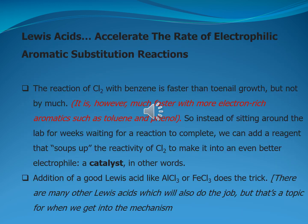Lewis acid accelerates the rate of electrophilic aromatic substitution reactions. The reaction of chlorine with benzene is faster than toenail growth, but not by much. It is, however, much faster with more electron-rich aromatics such as toluene and phenol. Instead of waiting weeks in the lab for a reaction to complete, we can add a reagent that boosts the reactivity of chlorine to make it an even better electrophile — a catalyst. Addition of good Lewis acids like AlCl3 or FeCl3 does the trick.